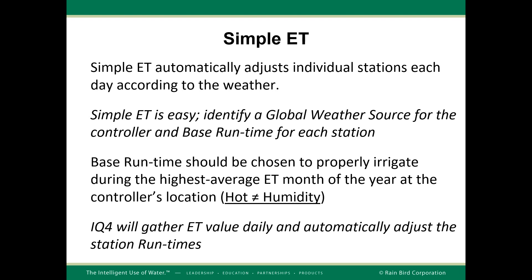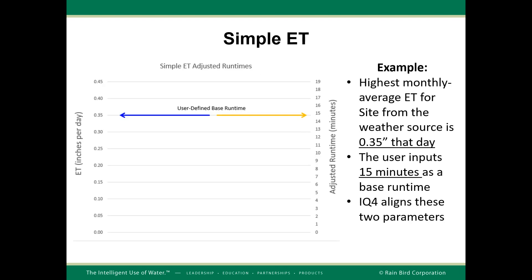IQ4 will gather ET values daily and automatically adjust station runtimes accordingly. Here is an example: the highest monthly average ET for the site is set at 0.35 inches per day, and the user inputs 15 minutes as a base runtime. IQ4 aligns these two values so when an ET of 0.35 inches is received, the station runs for 15 minutes. If a lower ET is received, the station runs for a shorter time; if a higher ET is received, it runs for a longer time.